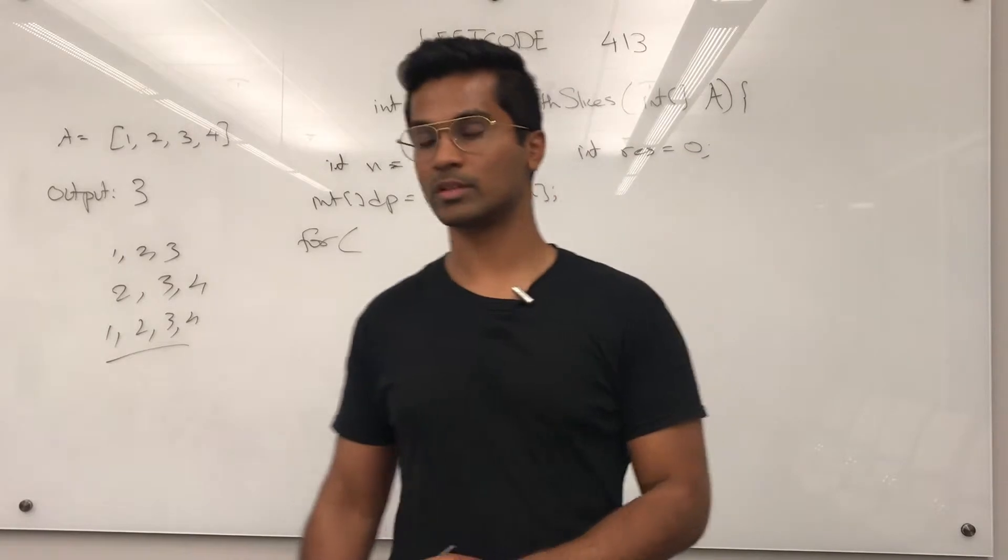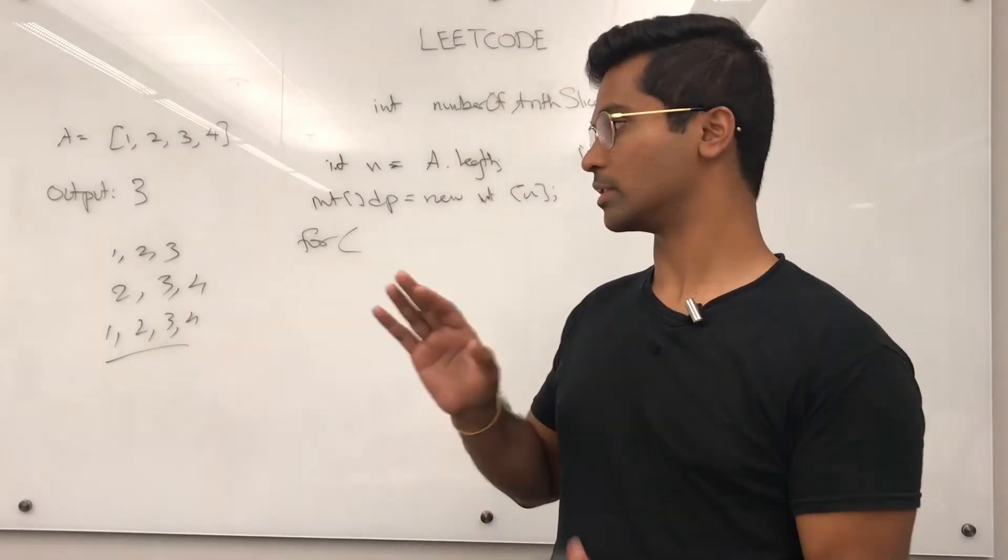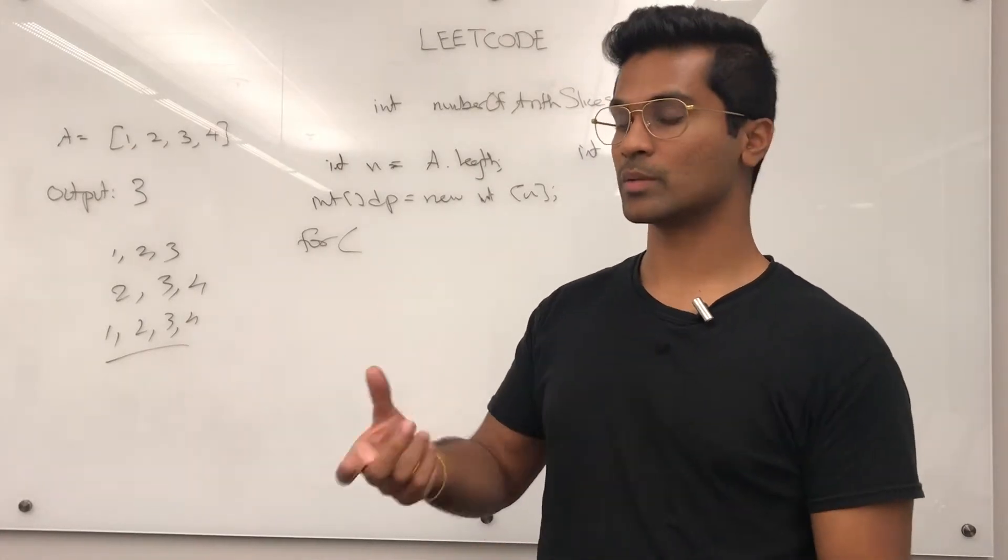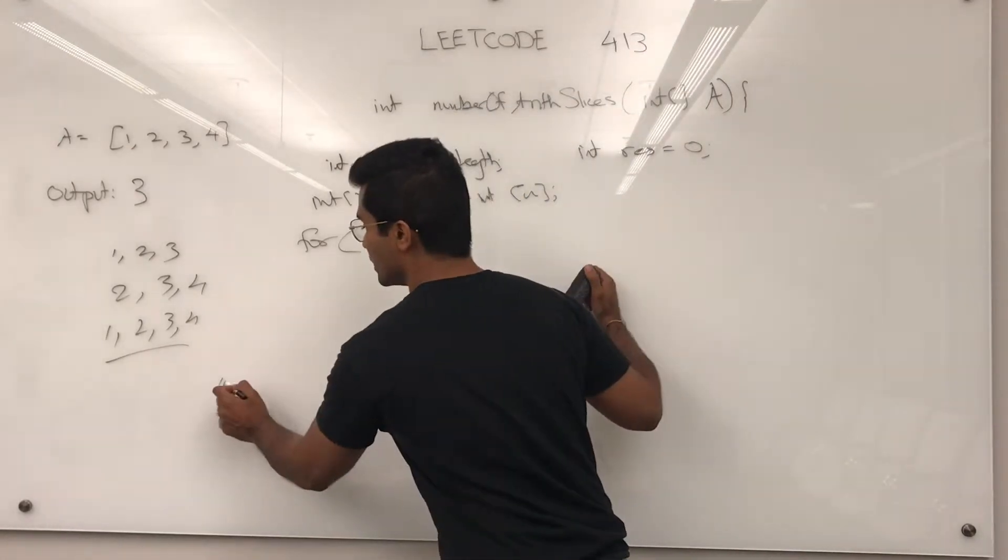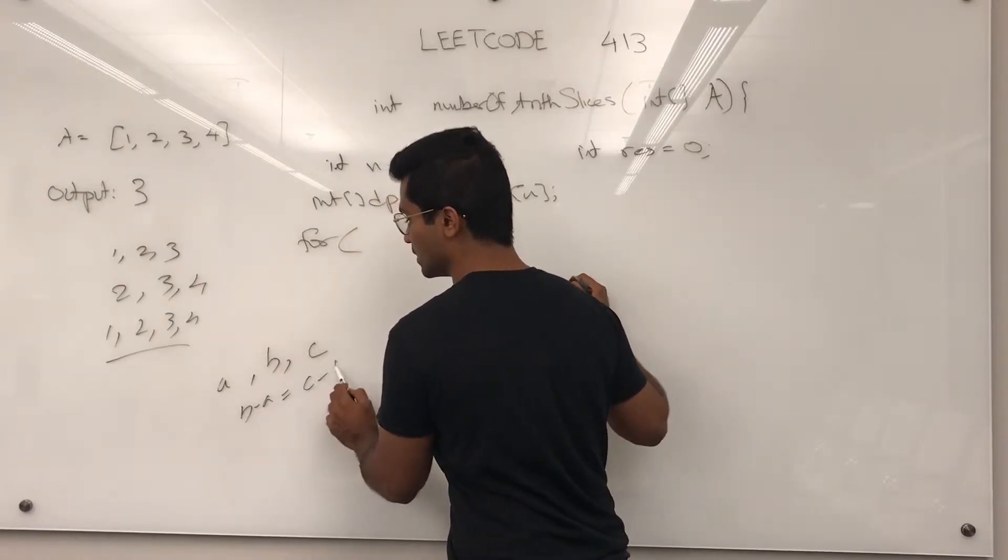For a sequence to be arithmetic, it has to be at least 3 numbers in length, and the difference between a, b, and c, like the difference between b and a has to be the difference between c and b.